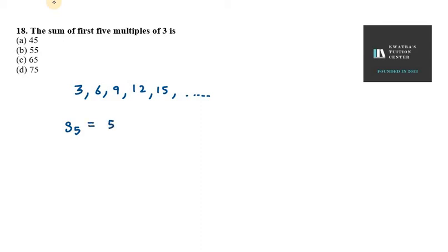So S5 equals 5 over 2 in bracket 2 into A, where A here is 3, plus N minus 1, N minus 1 is 5 minus 1, into D.